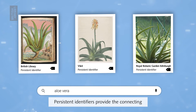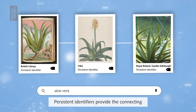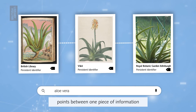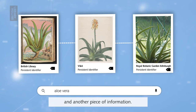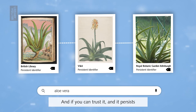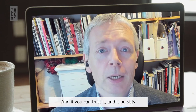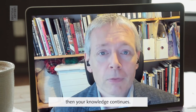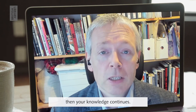Persistent identifiers provide the connecting points between one piece of information and another piece of information, and if you can trust it and it persists, then your knowledge continues.